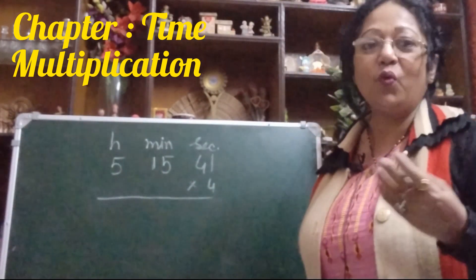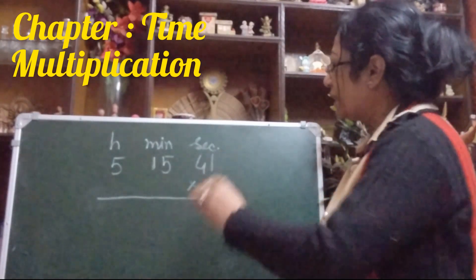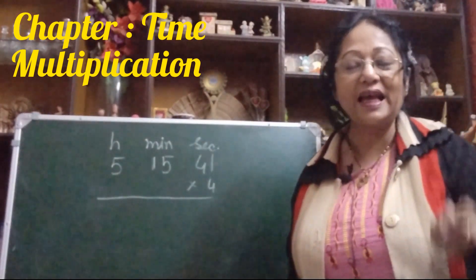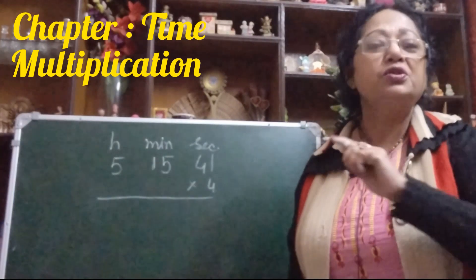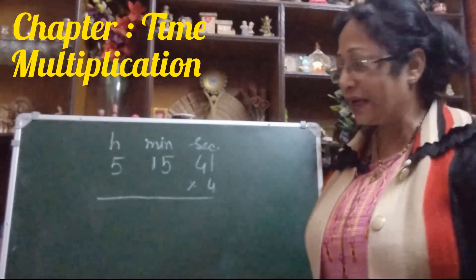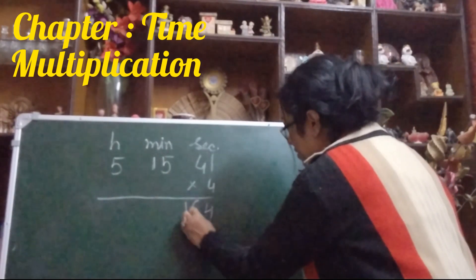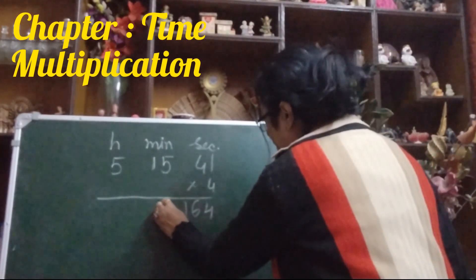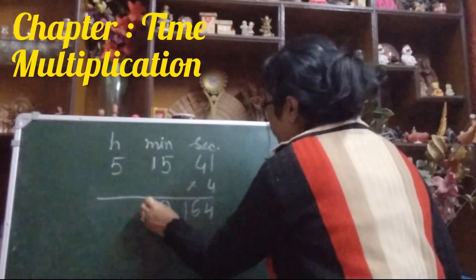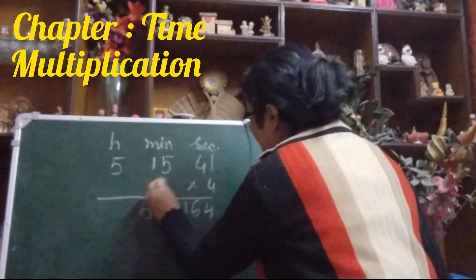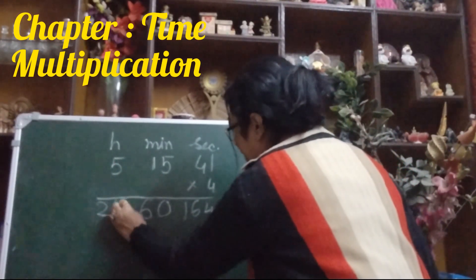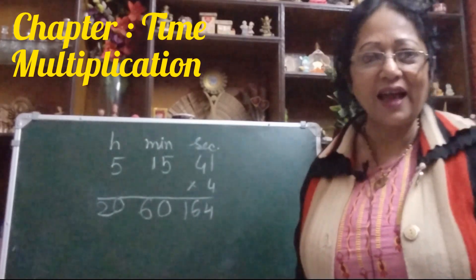I have taken one multiplication: 5 hours, 15 minutes, and 41 seconds. We will multiply by 4. Simply multiply: 4 ones are 4, 4 fours are 16, 4 fives are 20, so zero and carry 2. 4 ones are 4, that's 5 plus 6. 4 fives are 20. Simple multiplication, right?